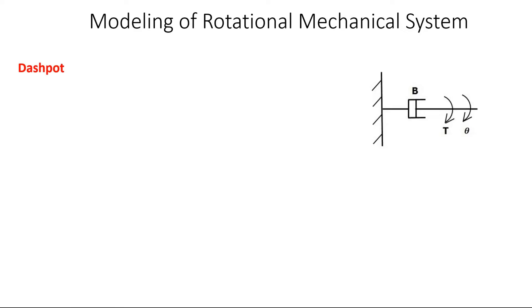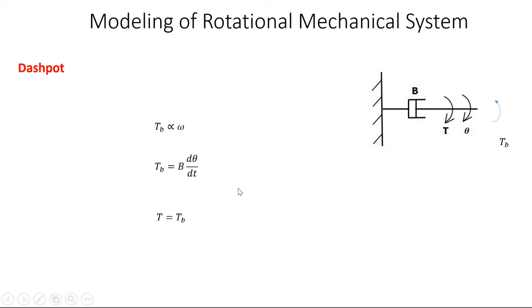For the dashpot, B is the coefficient of friction. The torque T is applied in the clockwise direction, and theta is the angular displacement. The opposing torque Tb is proportional to angular velocity omega, where omega = dθ/dt. Therefore Tb = B·dθ/dt, and since T equals Tb, the torque equation is T = B·dθ/dt.